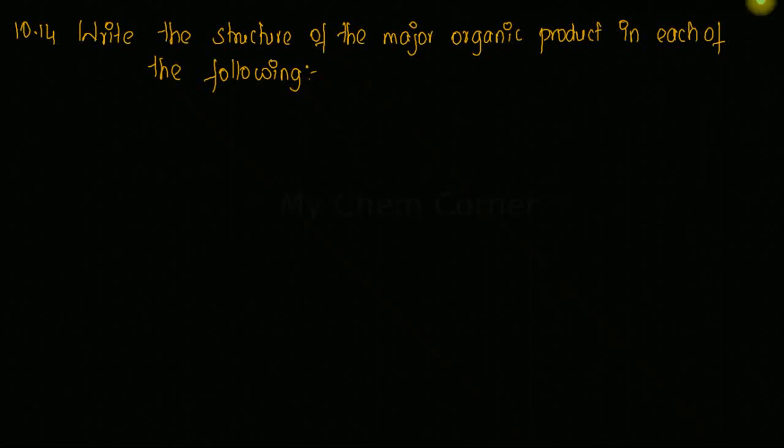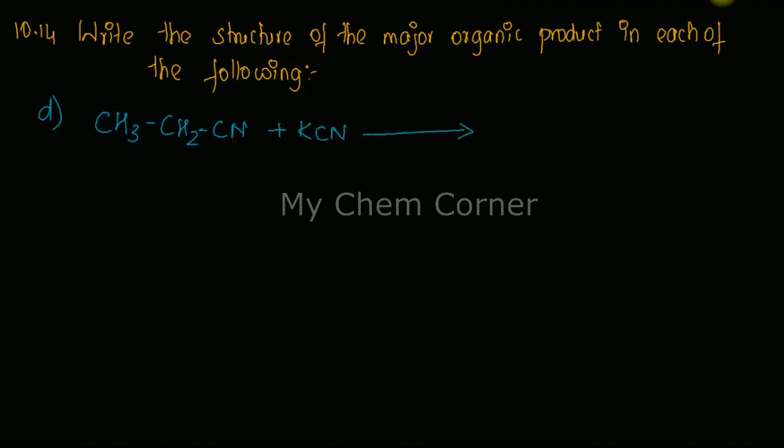Next is part B for this question. The question is CH3-CH2-Br plus KCN with ethanol. This is going to be the equation. Again, sorry, this is not CN, this is Br, so this is the question.